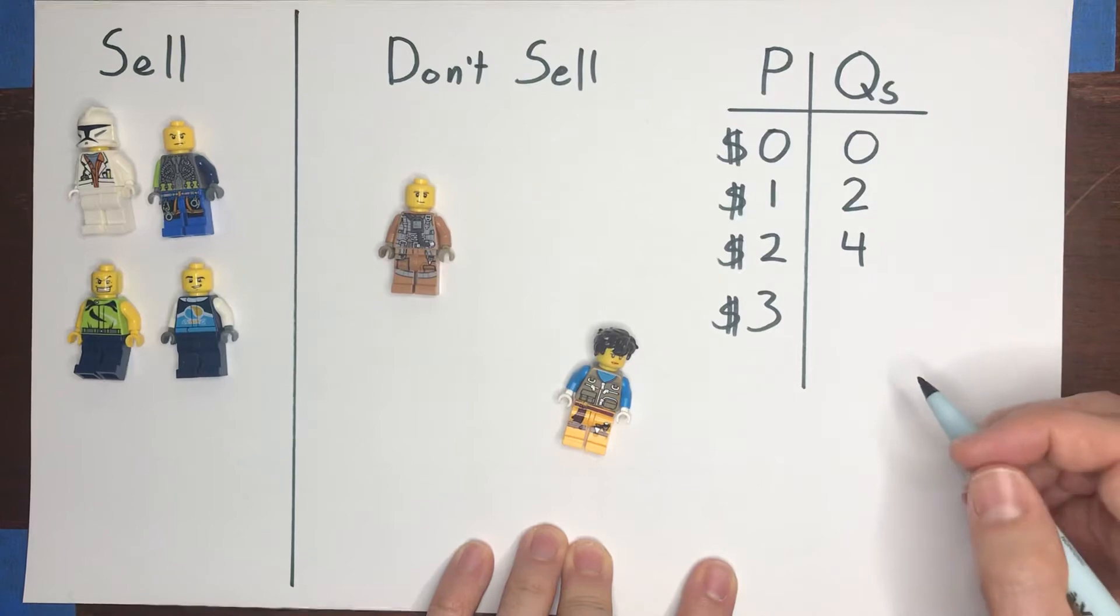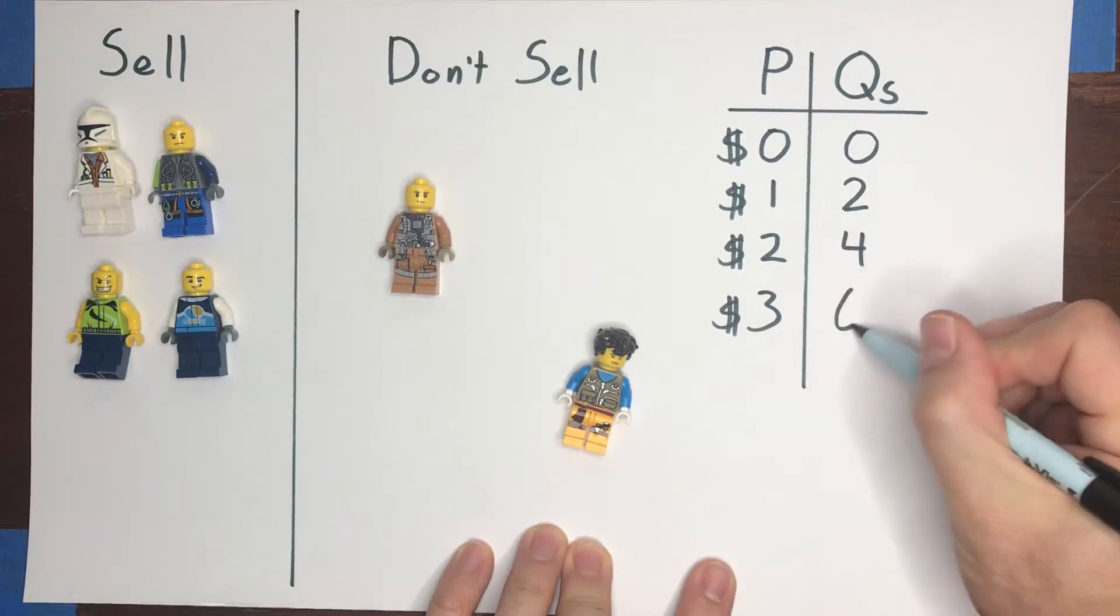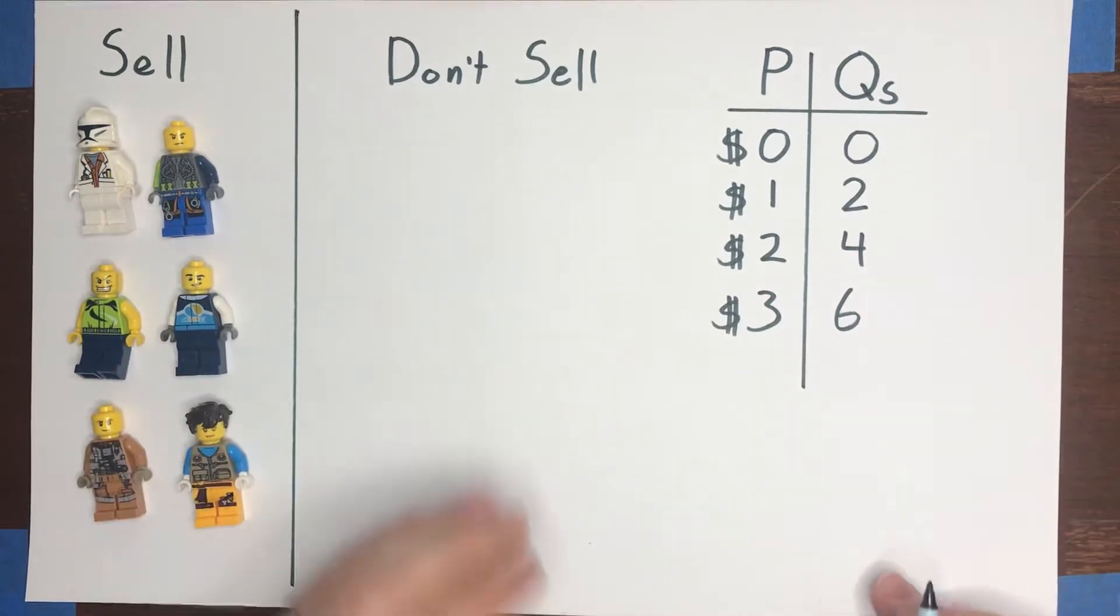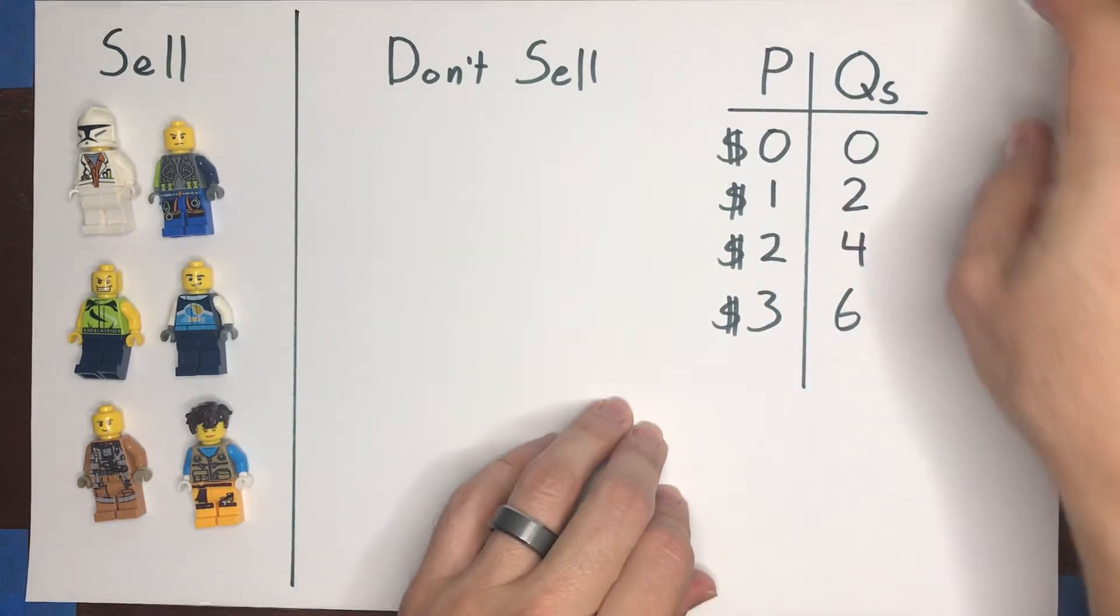And if we increase the price to three dollars, suppose now all six of our sellers would be willing to sell. So we've now got a table expressing the relationship between the price and the quantity of units supplied.